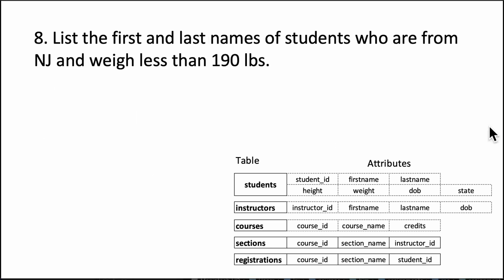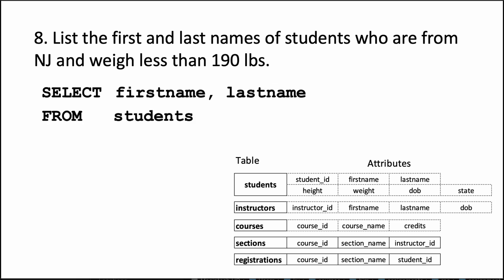Question 8 says list the first and last names of students who are from NJ and weigh less than 190 pounds. The first part is very clear - we are talking about the table students and we want particular columns firstname and lastname, so it's going to start very easy: SELECT firstname, lastname FROM students.